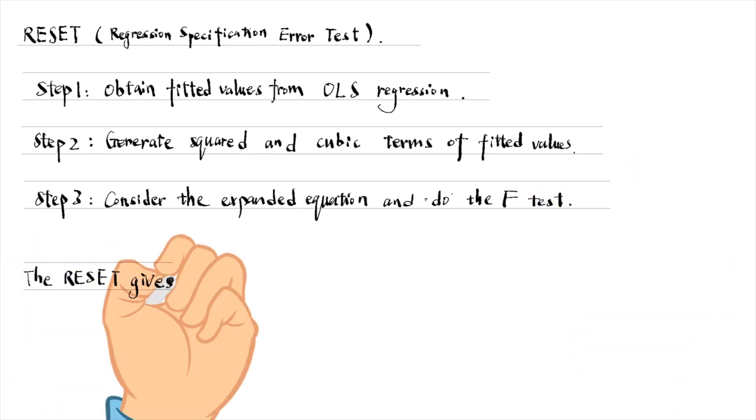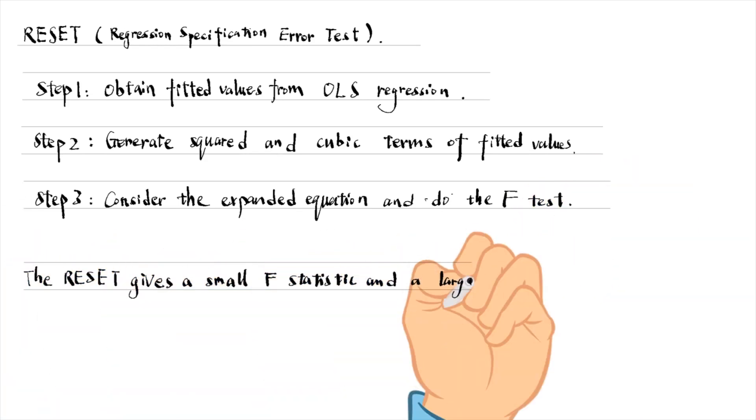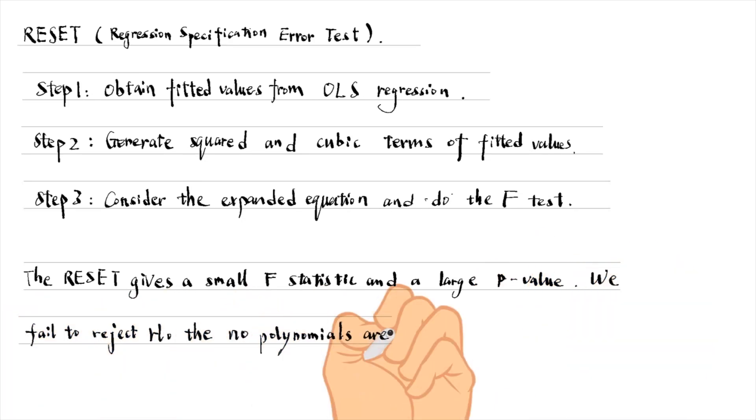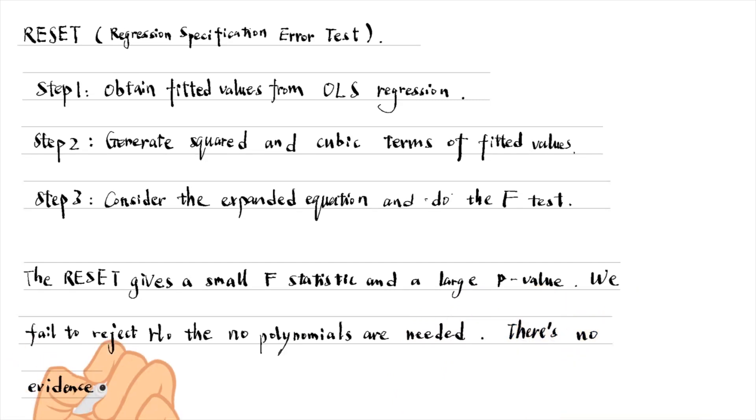The RESET gives a small F-statistic and a large p-value. We could not reject the null hypothesis that no polynomials are needed. There is no evidence of functional form misspecification by RESET.